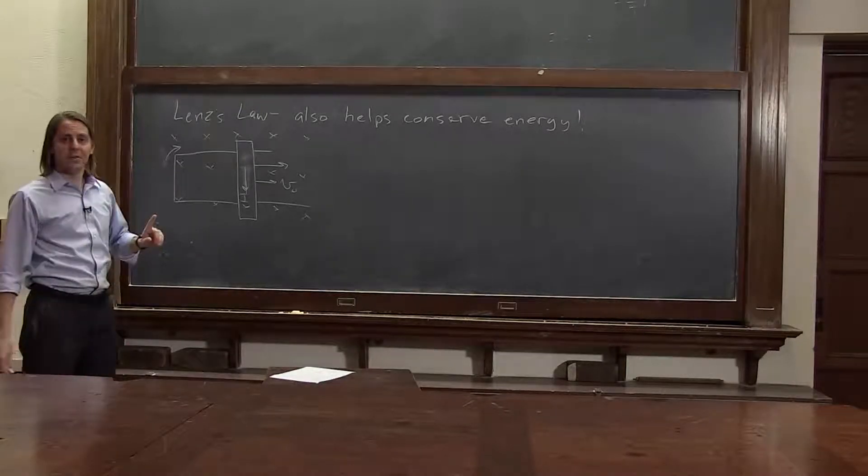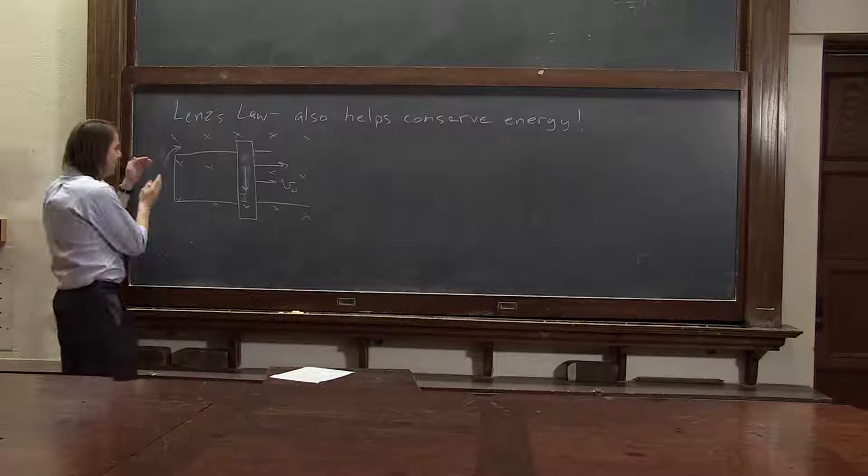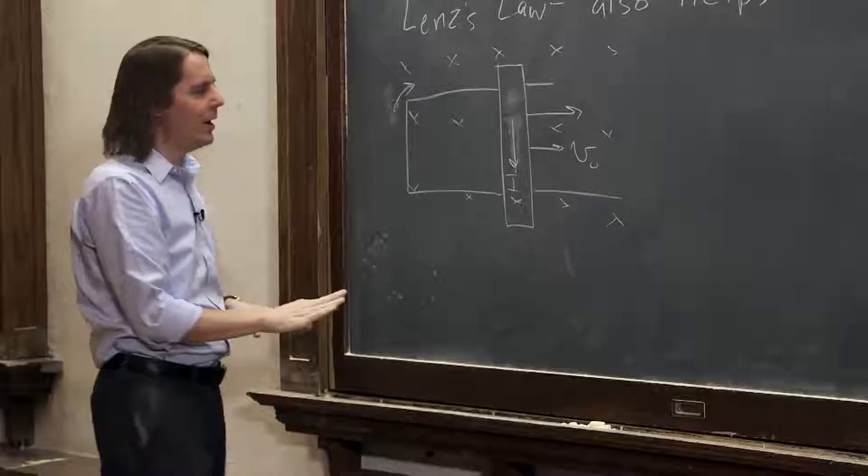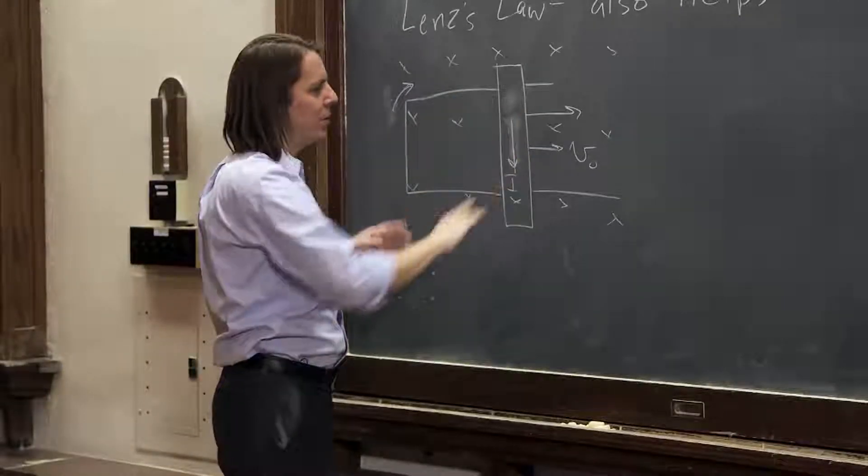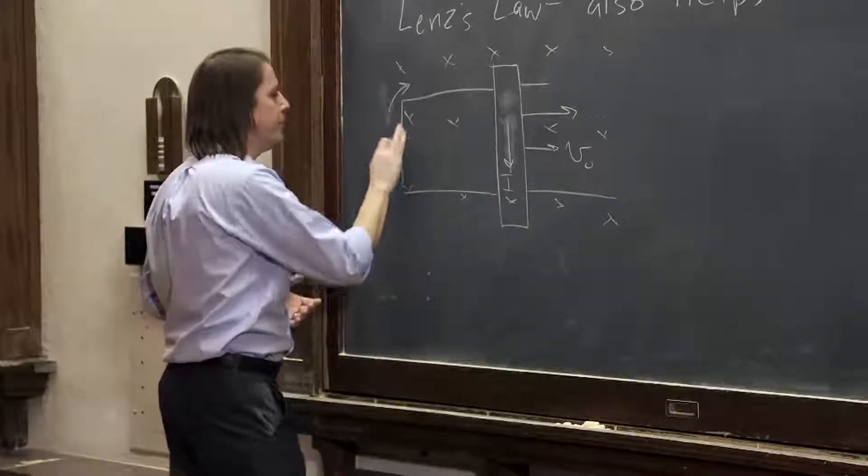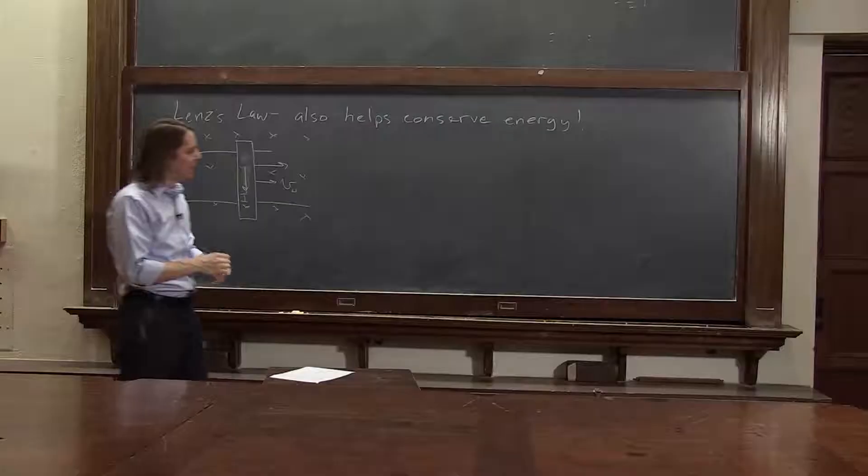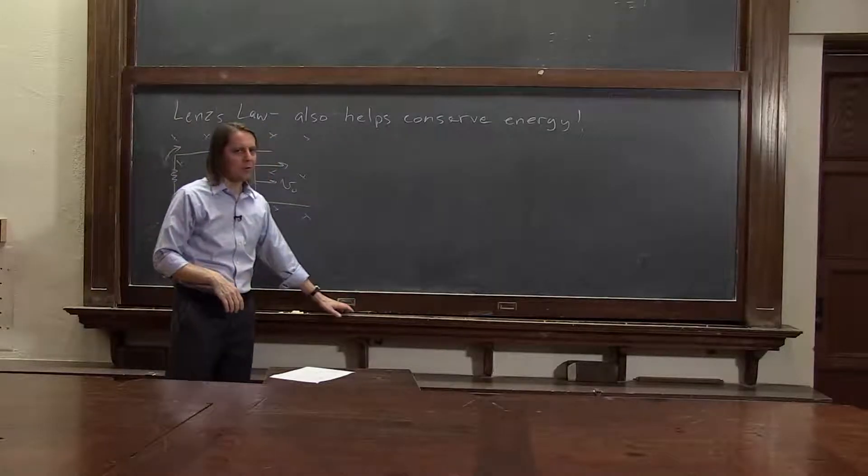You can make a rail gun. You can make this thing move if you drive current with a power supply. But here we're talking about cases where there's no power supply to make something move. If there's no power supply, then all it can do is lose energy to the resistor. So sometimes you can use Lenz's law by looking at a situation and saying which one is not going to create energy.